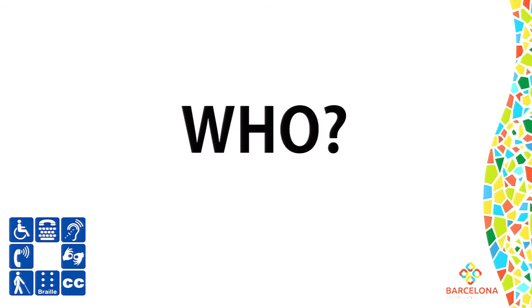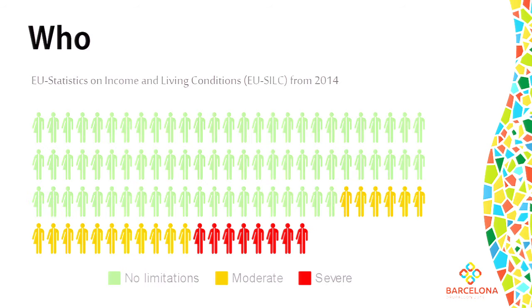So who do we actually do accessibility for? The latest World Health Organization fact sheet from 2014 says that more than a billion people — about 15% of the world's population — have some form of disability. That means between 110 and 190 million adults have significant difficulties in functioning. From EU statistics on income and living conditions, 8.5% have severe limitations and 17.5% have moderate limitations in everyday activities, for European adults over 16.